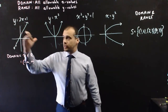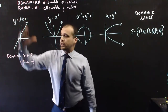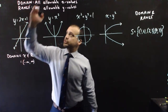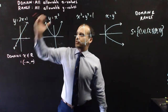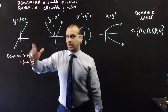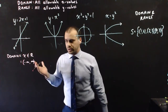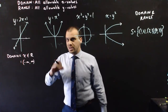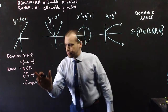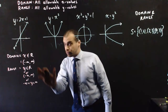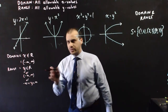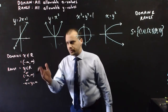Now what about the range? Are there any y values that it can't be? The arrow goes on and on forever and up and up. So y can also be all the real numbers, or negative infinity to infinity — that's what the range is. There are three different ways to write it, but you don't have to write all three. Choose one that you're most comfortable with and write that.